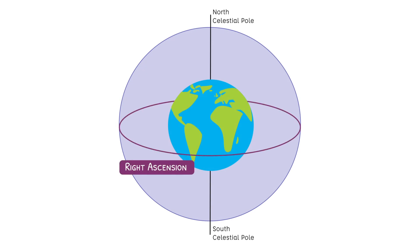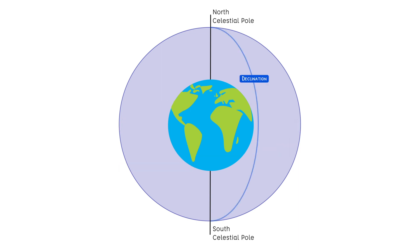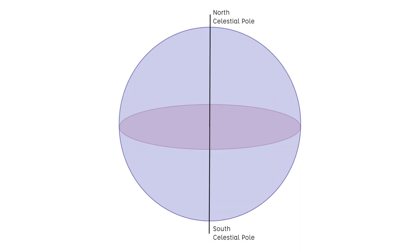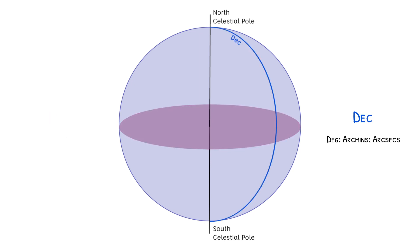The x-axis is called right ascension and the y-axis is called declination. Because we are looking out from Earth, it makes sense to draw the map on the surface of a sphere. Right ascension is measured in hours and declination is measured in degrees.